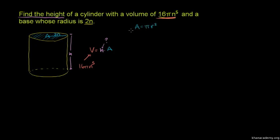π r squared, one of the first things we learned in geometry. And so in this situation, it would be equal to π - our radius they tell us is 2n, so π times 2n squared,